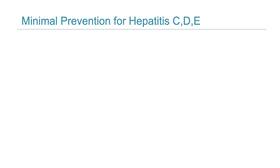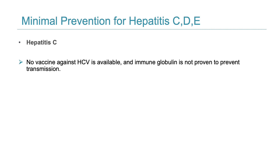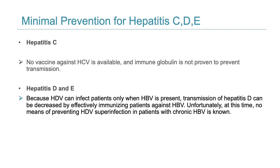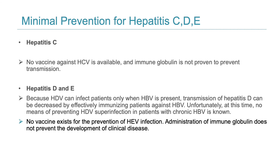For hepatitis C, D and E, prevention options are limited. There is no vaccine against HCV and immune globulin has not been proven effective at preventing transmission. For hepatitis D, because HDV can only infect patients when HBV is present, transmission of HDV can be decreased by immunizing patients against HBV. Unfortunately, no means of preventing HDV superinfection in patients with chronic HBV is currently known.